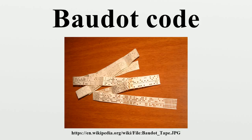In 1901 Baudot's code was modified by Donald Murray, prompted by his development of a typewriter-like keyboard. The Murray system employed an intermediate step — a keyboard perforator — which allowed an operator to punch a paper tape, and a tape transmitter for sending the message from the punched tape. At the receiving end of the line, a printing mechanism would print on a paper tape, and or a re-perforator could be used to make a perforated copy of the message, as there was no longer a direct correlation between the operator's hand movement and the bits transmitted.